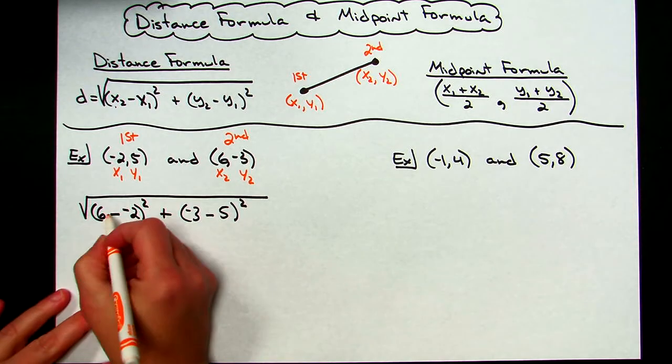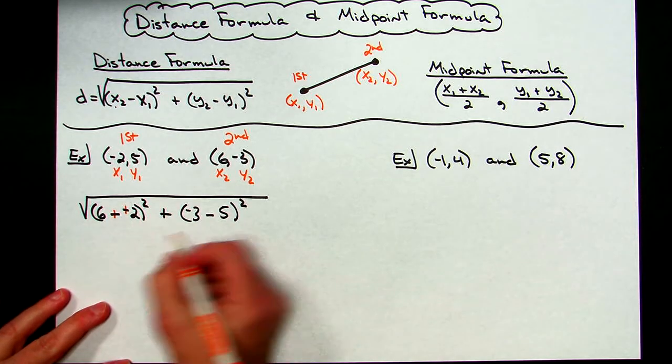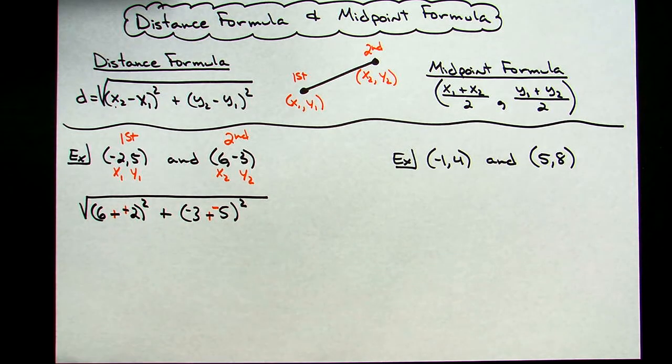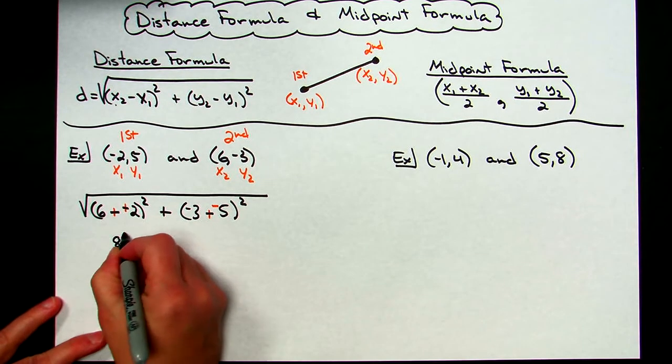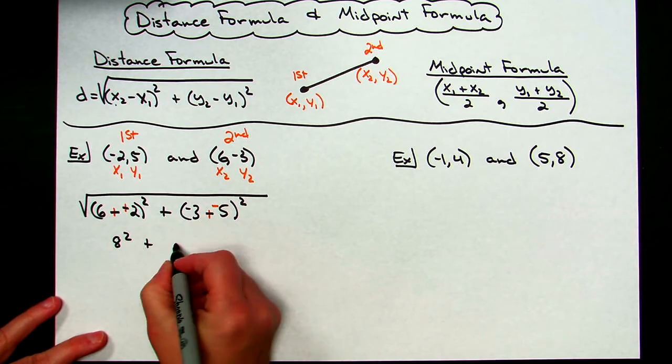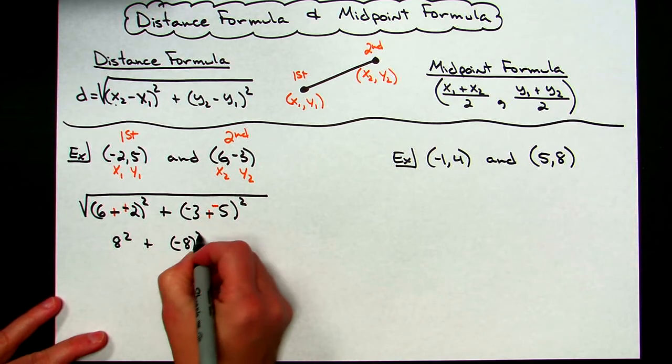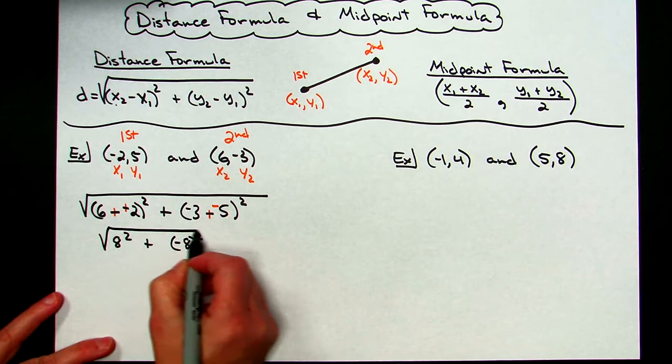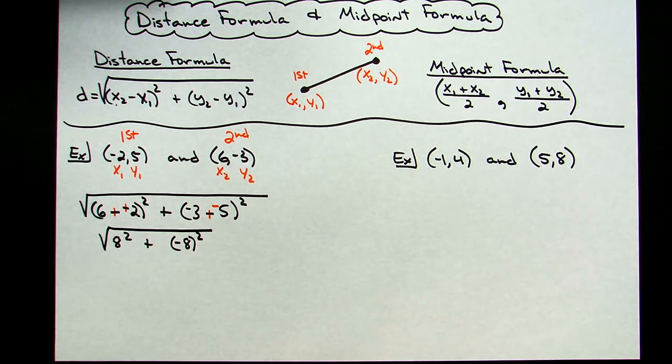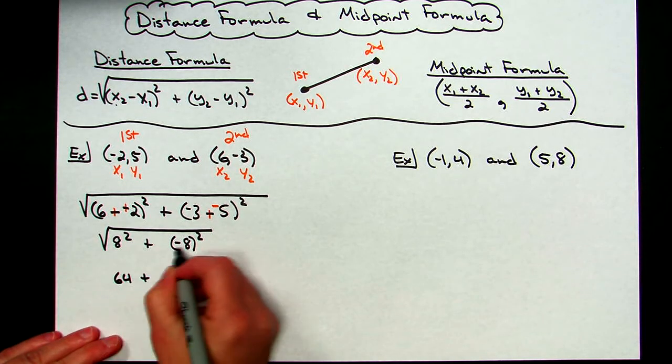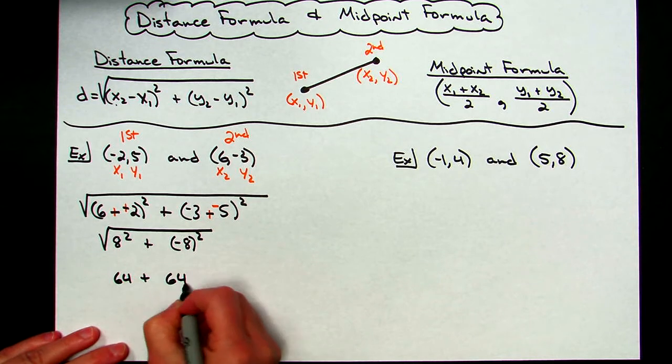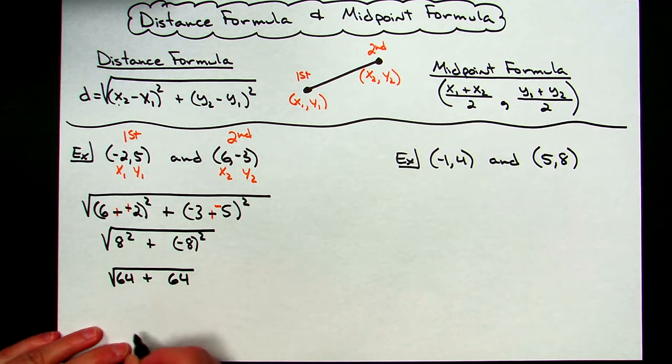Now depending on how you deal with your integers, I usually look at this as a plus plus. This one over here turns into a plus minus. So I'm going to have 6 plus 2 is going to give me an 8, so I'll have 8 squared. Negative 3 plus a negative 5 gives me negative 8, quantity squared, and each step I still have the square root over it. 8 squared is going to be 64, negative 8 squared is also 64.